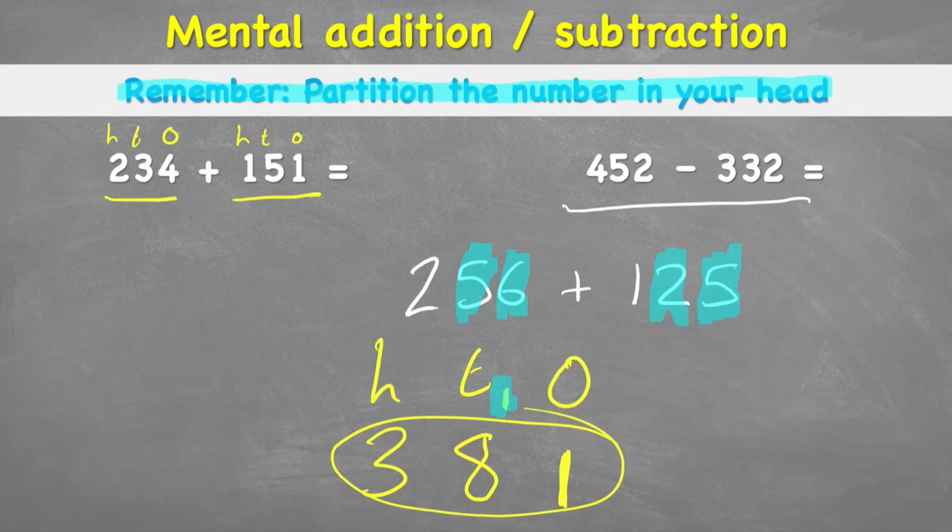So it's super important to always remember to go from the smallest value. Because if you have more than 10, you're going to need to regroup it into the next column.